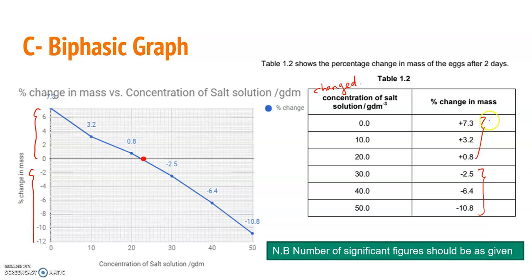I have a highest value of 7.3 on one side, and negative 10.8 on the other. I'll scale the y-axis going every 2 units — so 0, 2, 4, 6, 8 on the positive side and negative 2, negative 4, negative 6, down to negative 12 on the negative side. I'll then find the value of the small box.